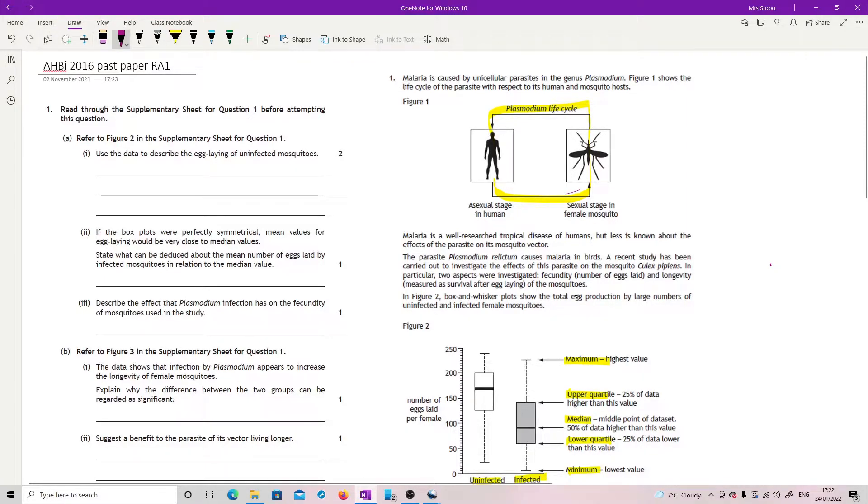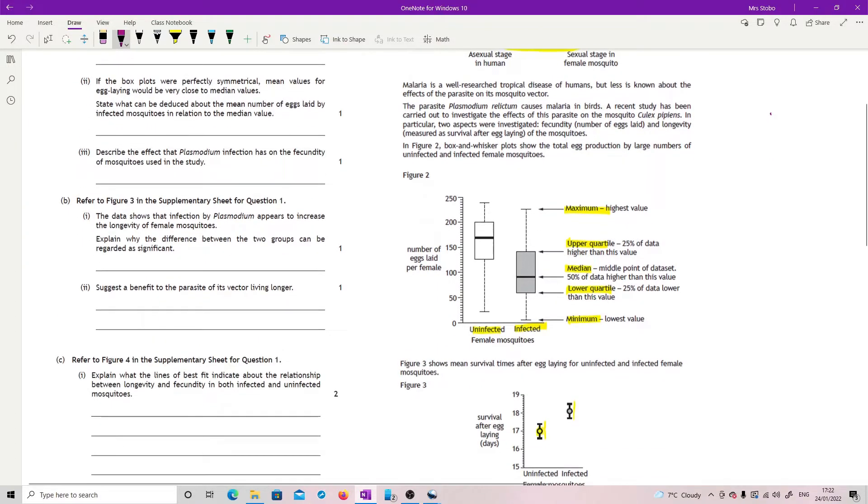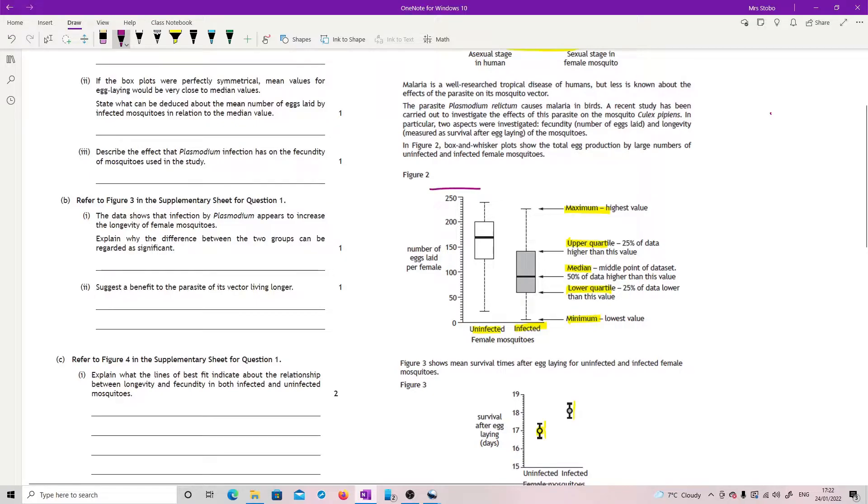The nice thing is they almost always tell you refer to figure two, go to graph one - they tell you where you're looking. Use the data to describe the egg laying of uninfected mosquitoes. So that means I am looking at this point here.